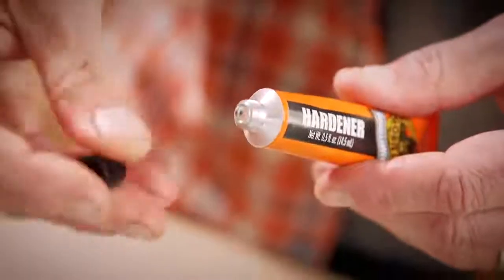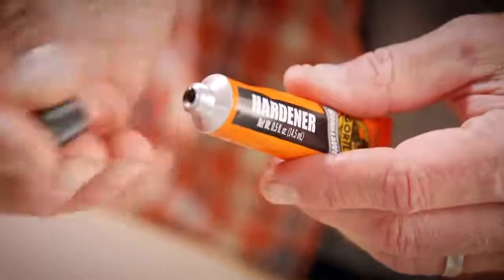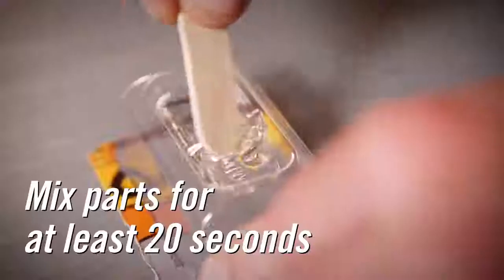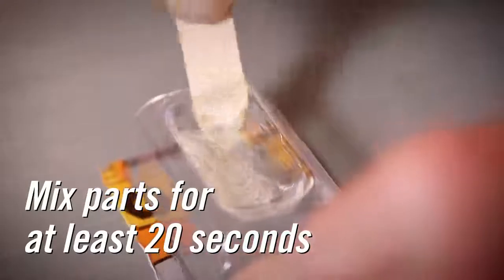For the tubes, use the cap to puncture the foil seal for first use. Next, using the wood stick provided or another mixing tool, mix the two parts for at least 20 seconds until they're completely combined.